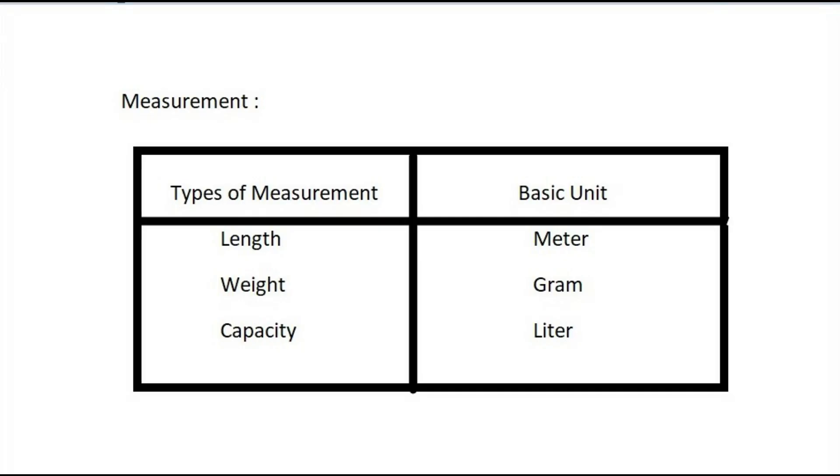Measurement is defined as the act of measuring or the size of something. There are different types of basic measurements: length, weight, and capacity. The basic units for these measurements are meter, gram, and liter.